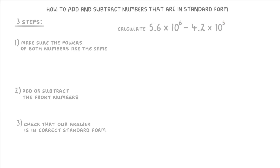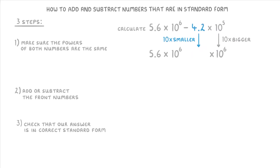It's up to you whether you change them both to have a power of 5 or both to have a power of 6, but in general it's easier to go for the bigger power. So let's make them both times 10 to the 6. 5.6 times 10 to the 6 is already to the power of 6, so we can just rewrite it. To make 4.2 times 10 to the 5 into a power of 6, the times 10 part will effectively have gotten 10 times bigger, so to balance that out we make the front number 10 times smaller, so it becomes 0.42.